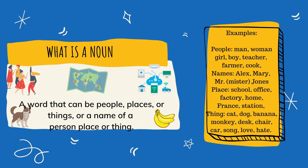So what is a noun? A noun is a word that can be people, places, or things, or the name of a person, place, or thing.